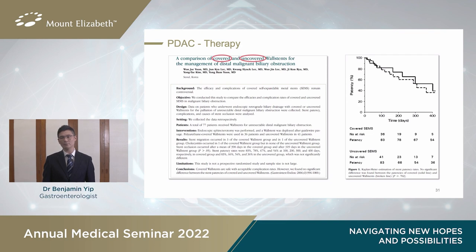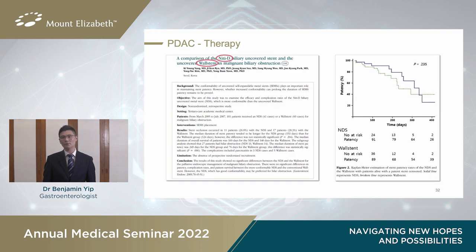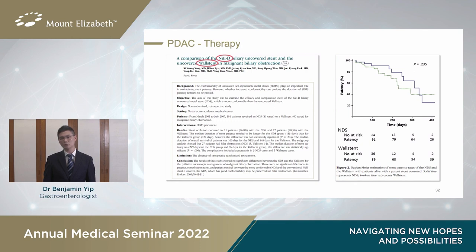In a study looking at both covered and uncovered stents, they were found to be no different in stent patency. What about comparing two types of different plastic stents — the NITI-D by Taewoong and the Wallstent by Boston Scientific? Again, there are no significant differences in terms of obstruction, but in a subgroup analysis, they found that for hilar obstructions, the more conformable NITI stents might do better.